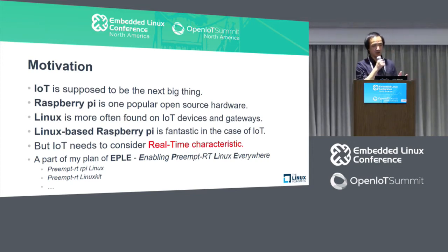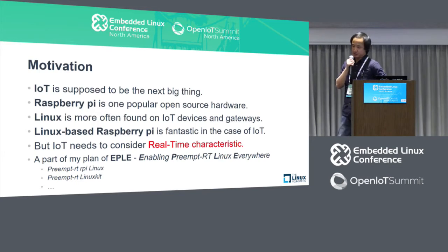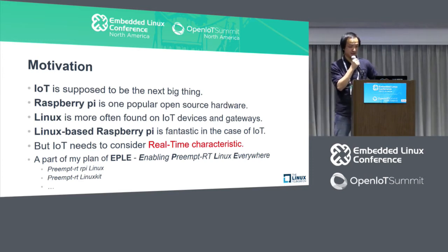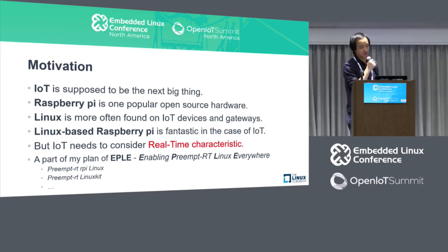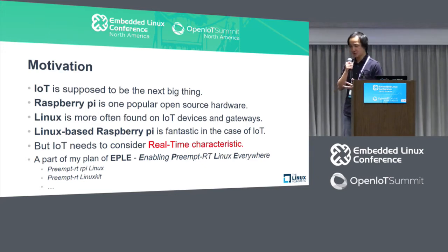Linux has become such a popular operating system for embedded systems and now for IoT devices. There was a report last year that said two-thirds of IoT gateways were deployed with Linux. So Linux can play very well in the IoT case. In my view, a Linux-based Raspberry Pi should be the best way to get started on IoT development — to build up your IoT technology and expand your IoT use cases. But for IoT, you also need to consider real-time.